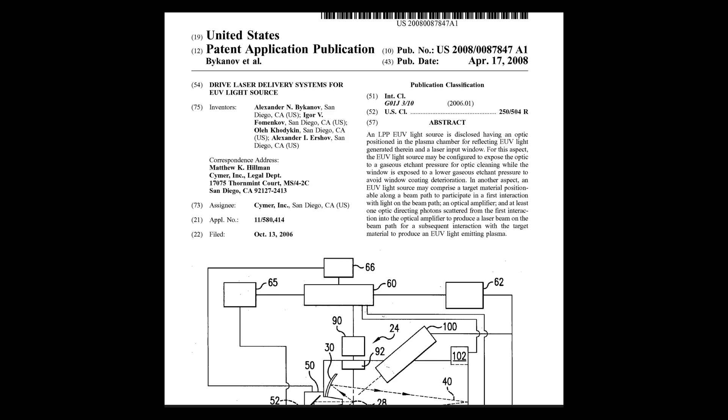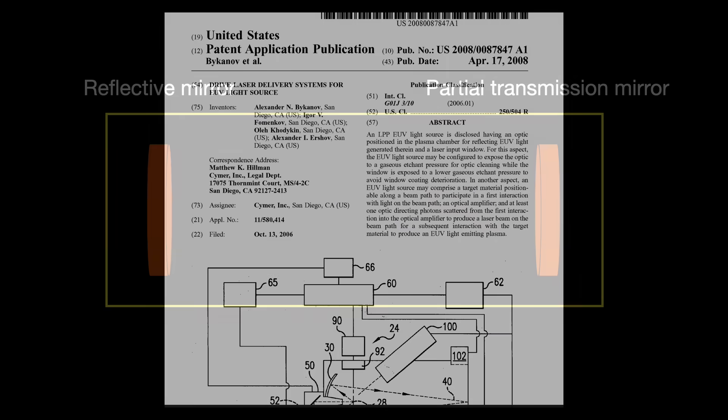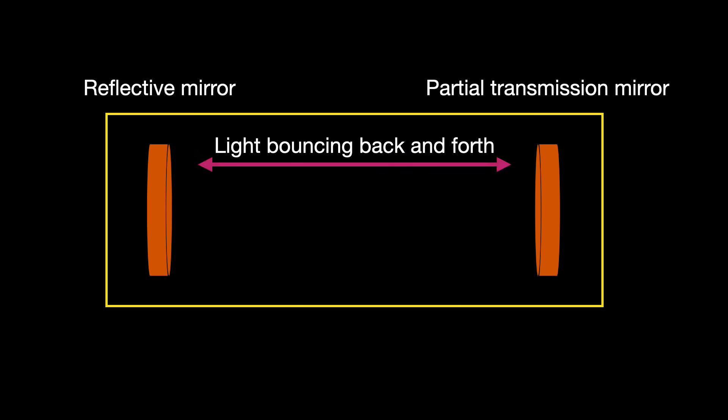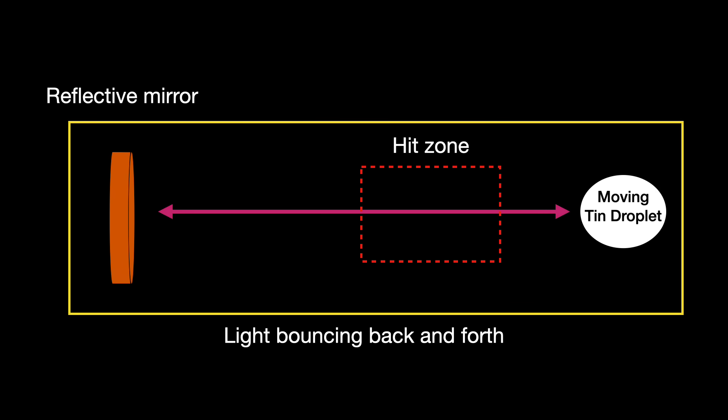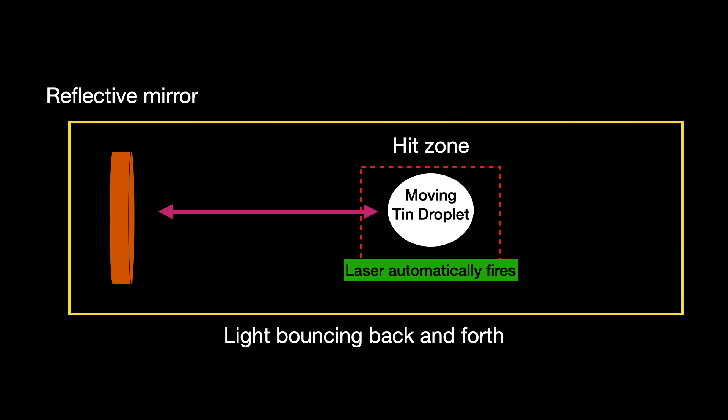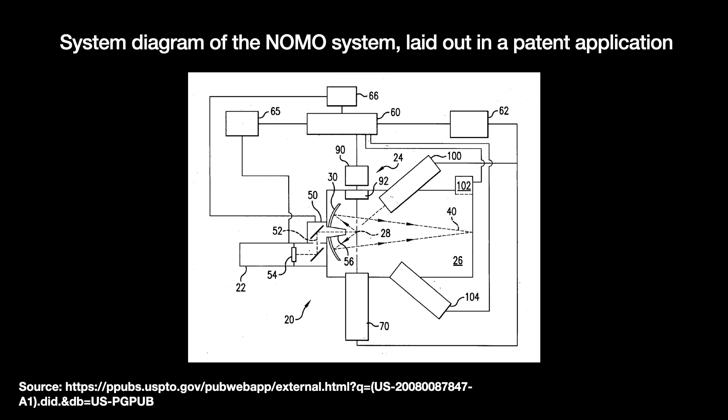NOMO is ingenious, but to understand why, we need to briefly talk about how a laser works. Inside a simple laser, we have two mirrors facing one another — one fully reflective and the other partially so. This is our laser cavity. Laser light is produced by a gain medium, bouncing back and forth between the two mirrors until it gets strong enough to burst through one of the mirrors to fire at a target. NOMO replaces one of those mirrors with the traveling droplet itself. As the droplet travels through the laser cavity, its own reflectiveness helps build up laser power until it enters a particular zone — and as soon as it does, the laser fires automatically. NOMO was self-timing, removing the need to precisely track the droplet's location and sync the laser pulse to it.